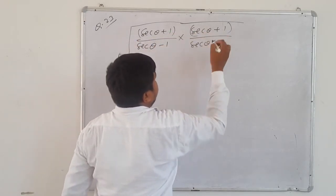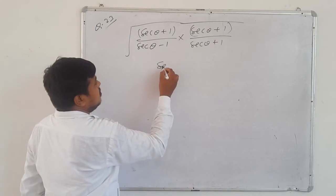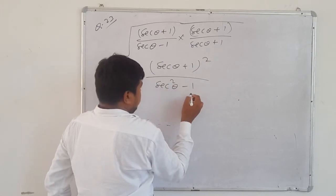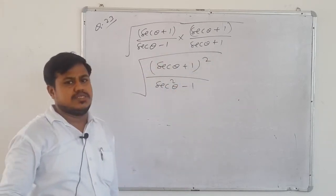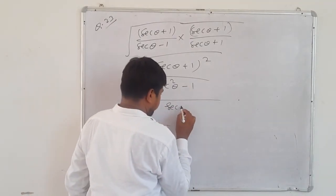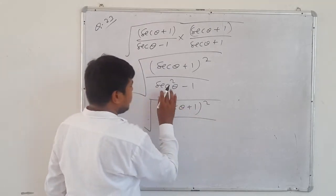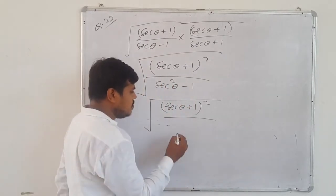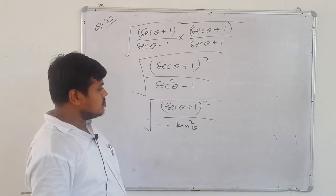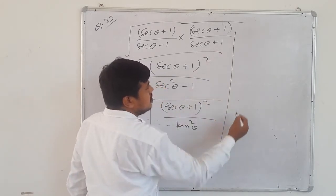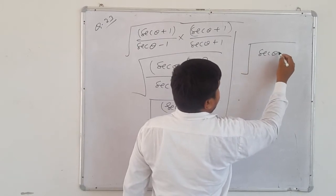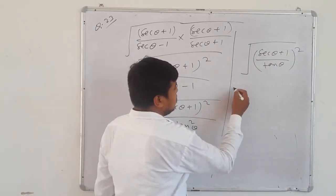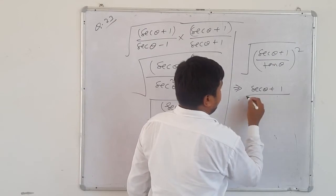The numerator: a digit multiplied by itself forms a whole square — (sec θ + 1)². The denominator: using a² - b² identity → sec²θ - 1 = tan²θ. So we get √[(sec θ + 1)²/tan²θ]. Both powers are the same, so we can bring to one power: (sec θ + 1)/tan θ whole square. The whole square and root cancel, giving (sec θ + 1)/tan θ.